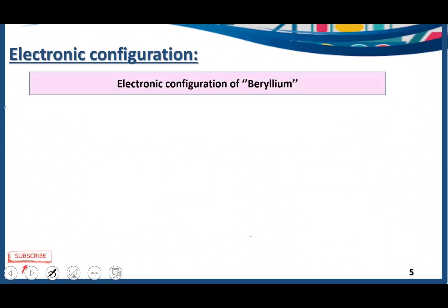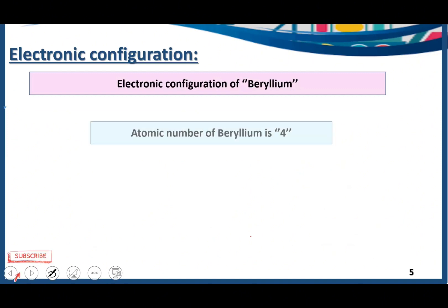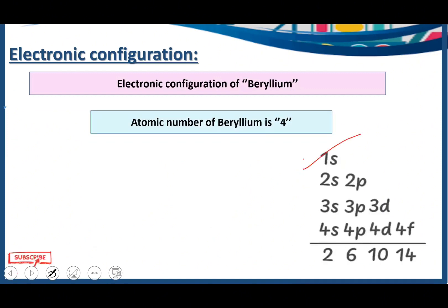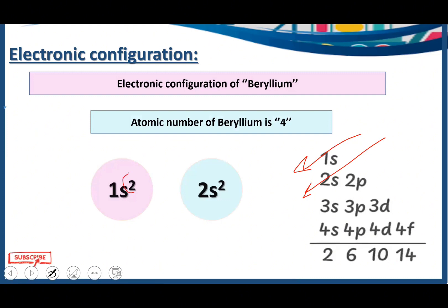Electronic configuration of beryllium — atomic number 4. We cut 1s first and then 2s. So 1s2 and then 2s2. We don't need any other energy level because we are done accommodating 4 electrons: 2 plus 2 is 4. This is the electronic configuration of beryllium.